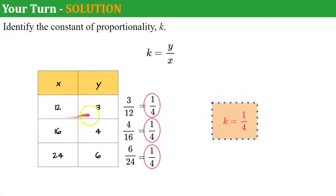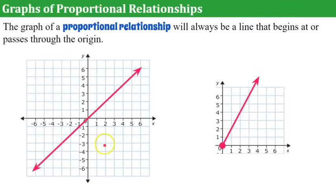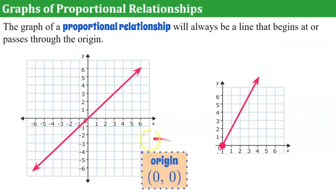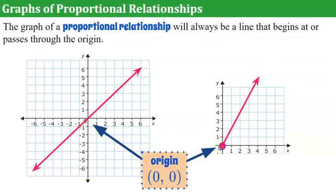In the next video you'll see the relationship between x and y — you cannot pair one row's x with another row's y; each row is related to the other. Now let's talk about the graph of a proportional relationship. The graph of a proportional relationship will always be a line that begins at or passes through the origin — the ordered pair (0, 0). On a first-quadrant graph we can see the line begins at the origin.